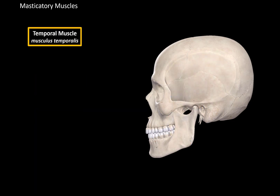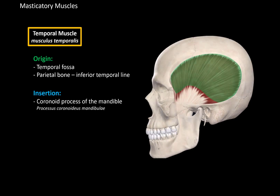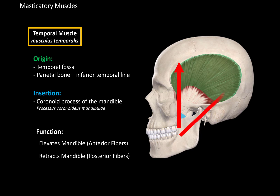The temporal muscle originates from the temporal fossa, located on the temporal bone, and also from the inferior temporal line on the parietal bone. The fibers then go down behind the zygomatic arch and attach to the coronoid process of the mandible. When the anterior fibers contract, they elevate the mandible, and when the posterior fibers contract, they retract the mandible.